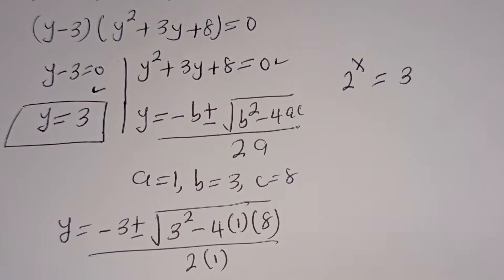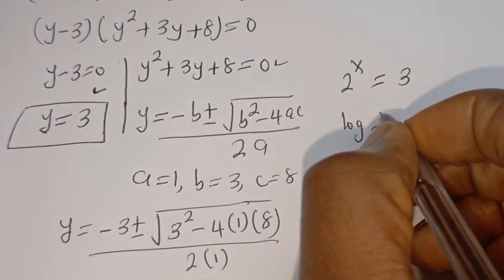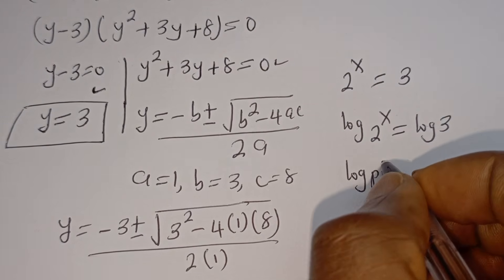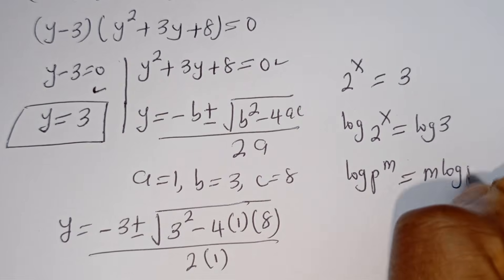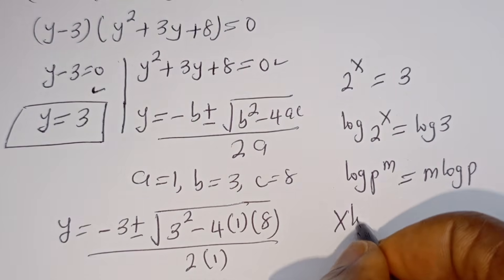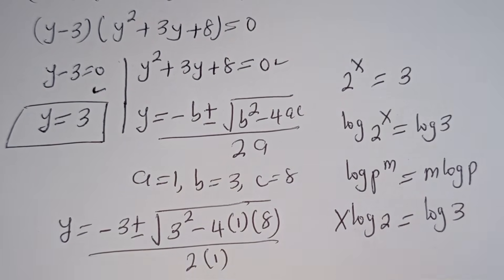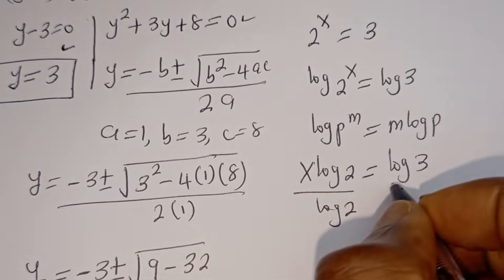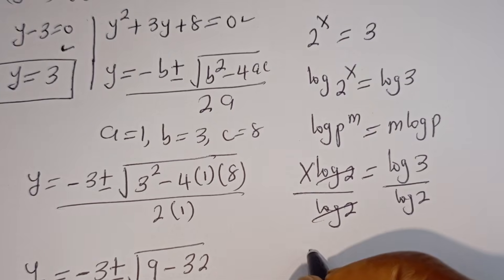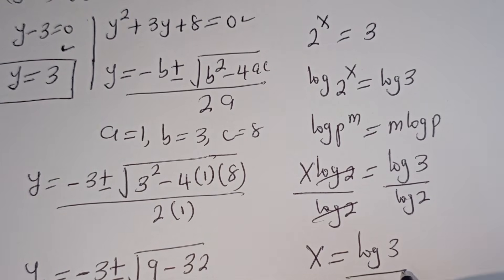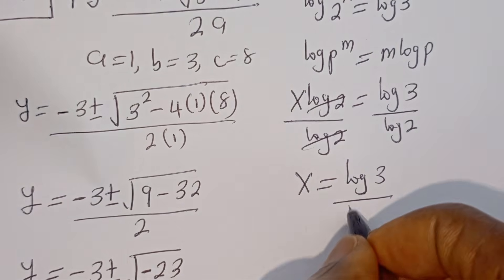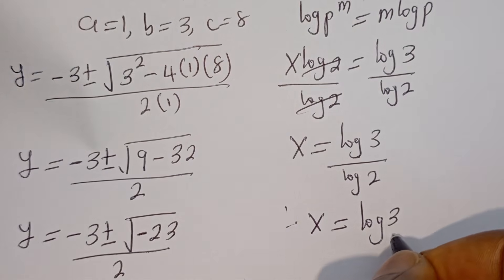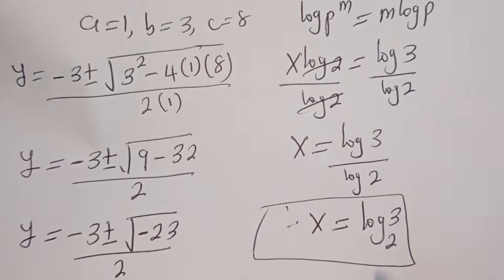Now let's take the log of both sides. Then we have log of 2 to the power of x is equal to log 3. Then, using the rule that log p to the power of m is equal to m log p, this can be written as x log 2 is equal to log 3. Then let's divide both sides by log 2: x is equal to log 3 over log 2. Therefore, x is equal to log 3 base 2, and this is the final answer.